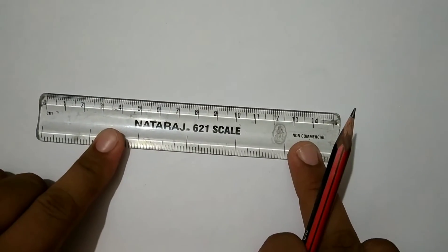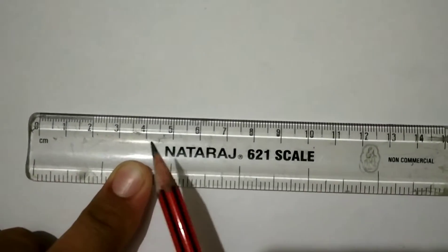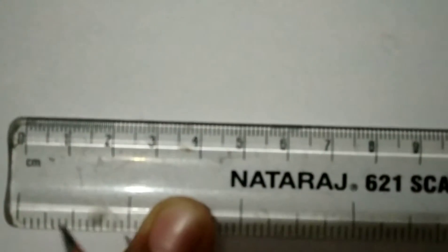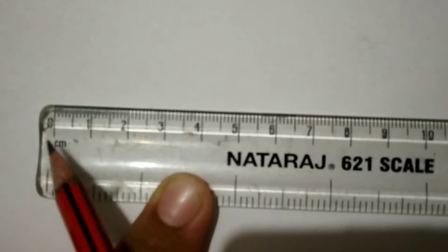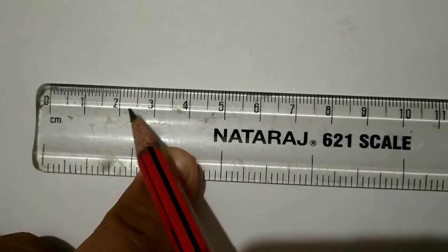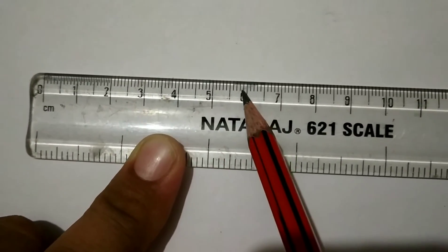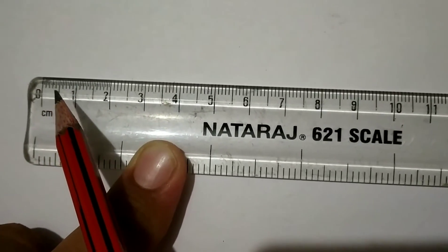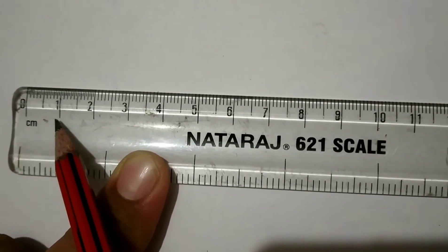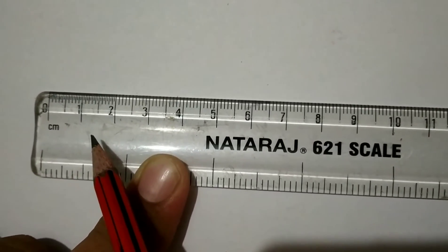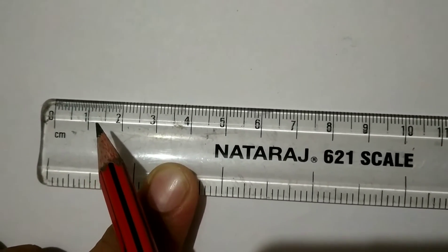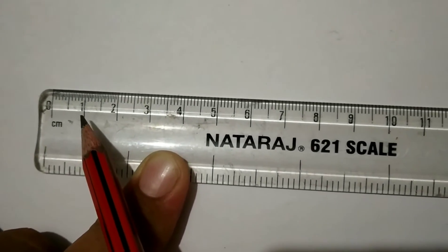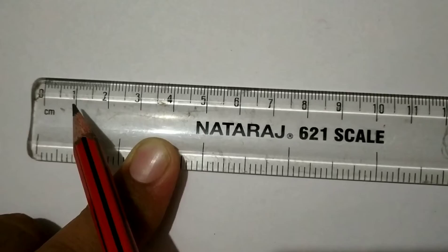This ruler has long lines and short lines. Each long line represents one centimeter, and each short line between any two long lines represents one millimeter, or divisions of a centimeter.